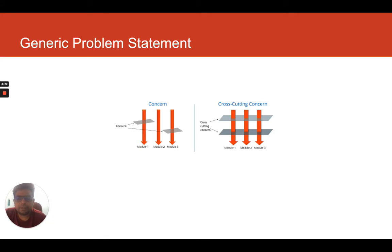In the given image you can see we have concerns and cross-cutting concerns. Concerns means it is specific to a module or application, but cross-cutting concerns are only those which span across modules and across applications. You can see on the right-hand side and left-hand side what we cannot call a cross-cutting concern.